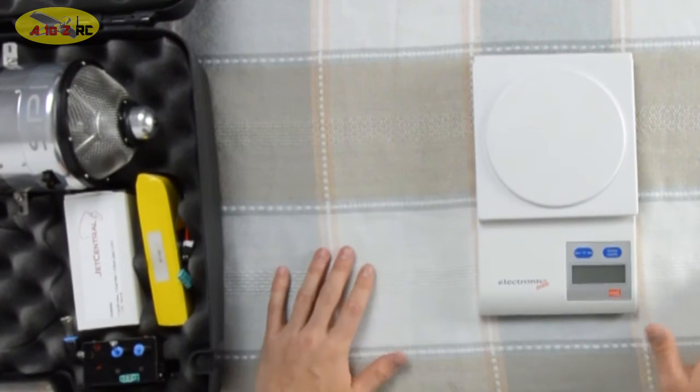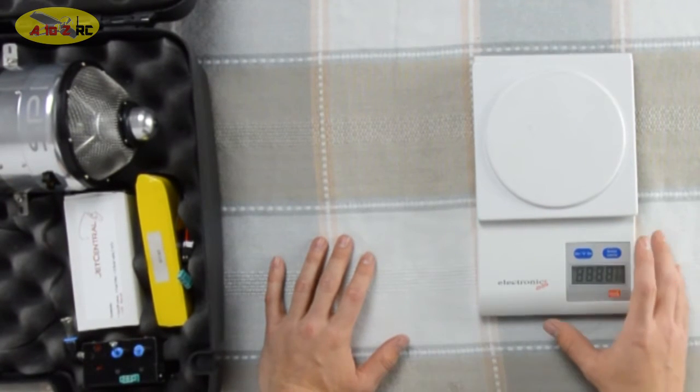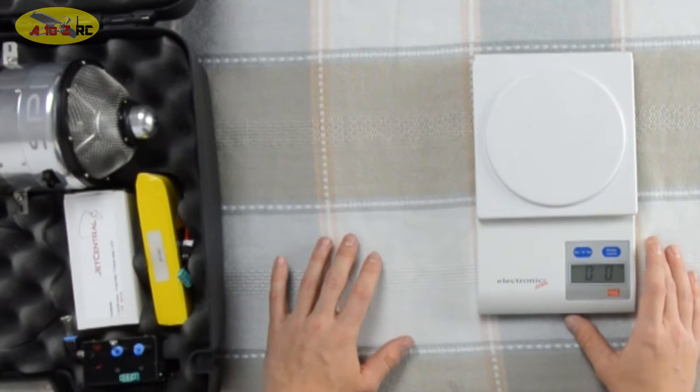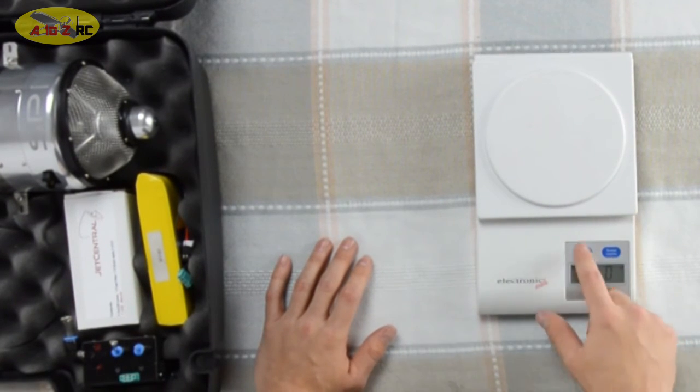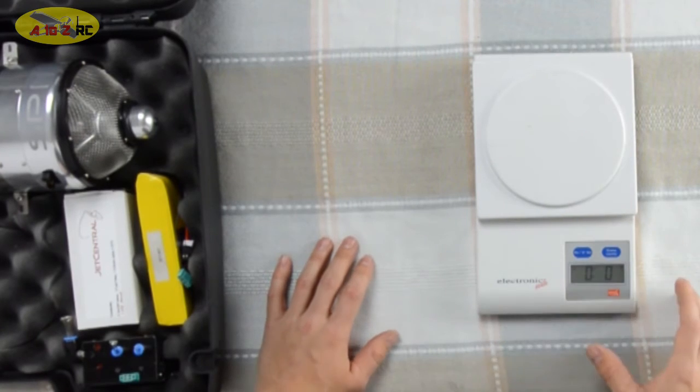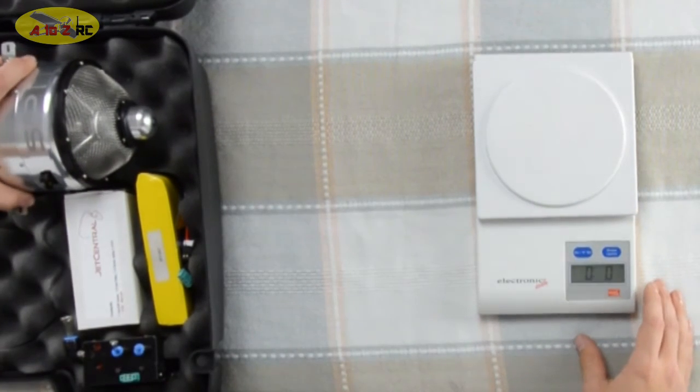Here we have our basic electronic scale. Let's go ahead and turn it on and set the zero. For this video, we're going to be in pounds and ounces. And this particular scale is accurate to one-eighth of an ounce. Looks like we're ready.